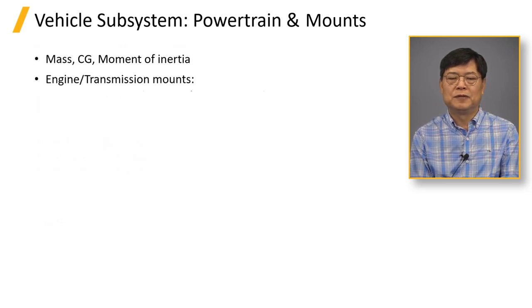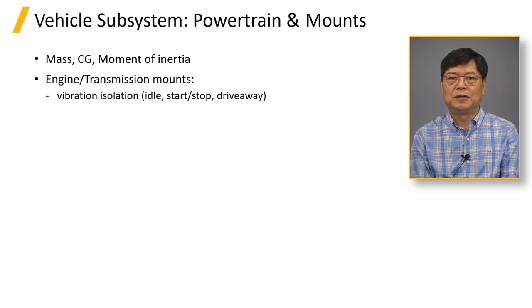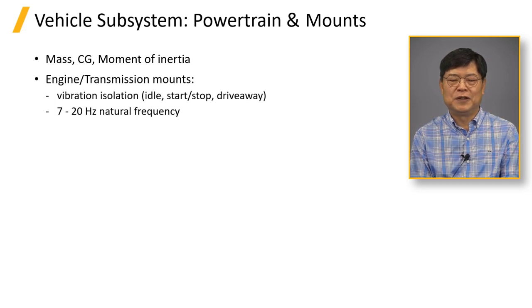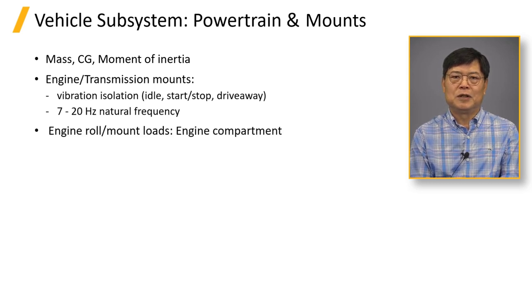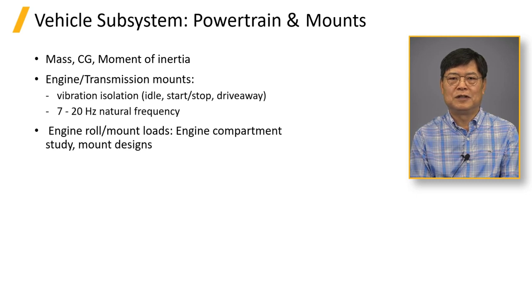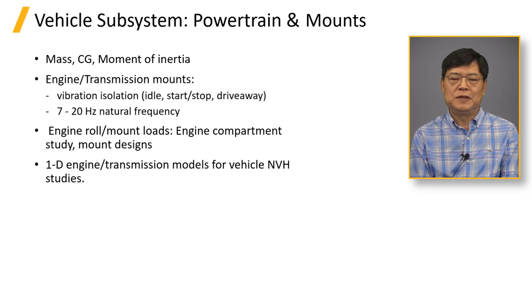Powertrain mounts are among the most sophisticated components in the vehicle system. Mounts are designed to isolate powertrain vibration during engine idle, start and stop, and drive away. Mount rates are tuned to maintain powertrain rigid body modes within a specified frequency range, for example 7 to 20 Hz. The force-versus-deflection curves for mounts should be faithfully represented in the vehicle dynamics model. One-dimensional modeling software such as AIMSIM, where the powertrain element can be co-simulated with a full vehicle model, can predict powertrain-related performance.